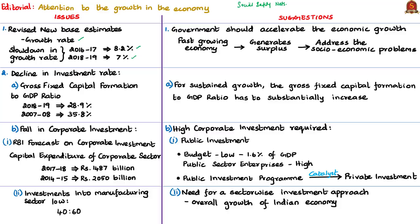The author states that the first priority of the government must be to accelerate economic growth. Only a fast-growing economy will generate surplus revenue, which will be helpful to address many socio-economic problems and also to provide social safety nets. We shall see about social safety nets in the later part of the analysis.